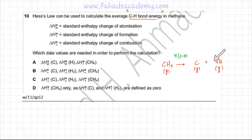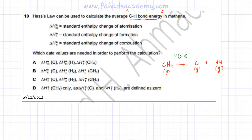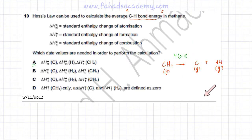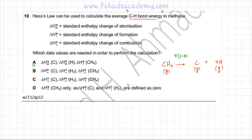This is the enthalpy change we want to find. Hess's Law states that one path is equal to another path as long as the reactants and products are the same — no matter which route is taken, the enthalpy change will be exactly the same. So we need to construct another path going from CH₄ all the way to C(g) + 4H(g).